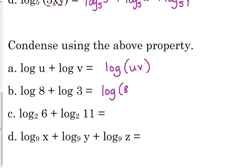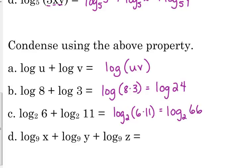Log of 8 plus the log of 3, that's the log of 8 times 3 which we can, of course, write as the log of 24. Log base 2 of 6 plus log base 2 of 11 condenses log base 2 of 6 times 11 or log base 2 of 66. And then a simple example when we have three of them, as long as its addition is both of the operations there, then it is log of x, y, z.